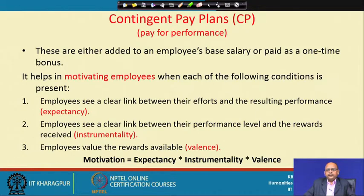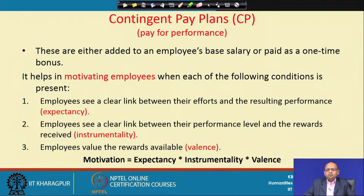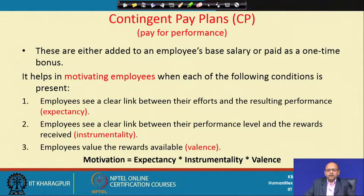One important motivational theory is Vroom's expectancy theory, which talks about whether a person would be motivated to perform well depending upon three factors. We use Vroom's expectancy theory to explain whether an employee would be motivated to perform well and how it is linked with the reward. The formula of motivation involves three indicators: expectancy, instrumentality, and valence — all multiplied with each other.